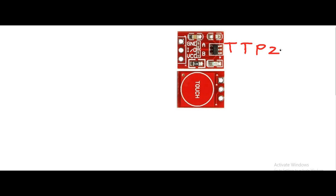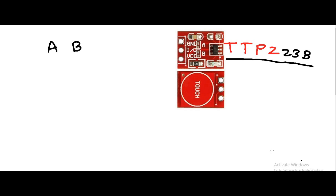There is a very cheap and easily available touch sensor in the market - the TTP223B. This is a capacitive type of touch sensor. You can see here this is the component side, and on the opposite side it is written 'touch' where you have to touch to change the output. There are four different modes, and depending upon the position of A and B you can see on the PCB board there is a logic one.